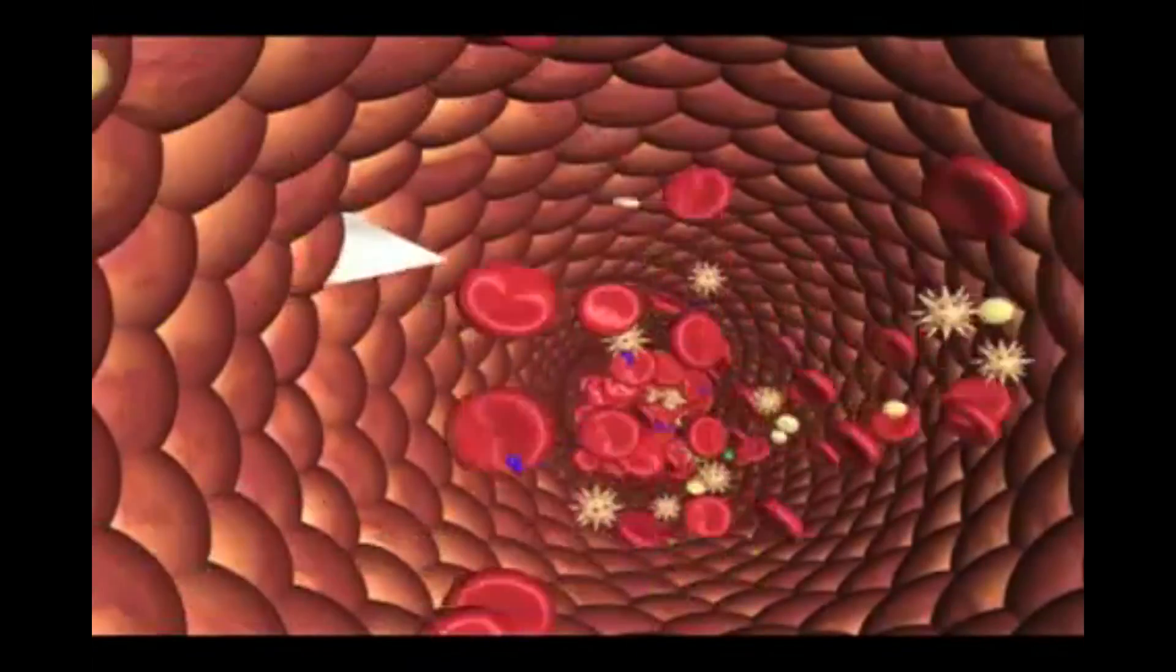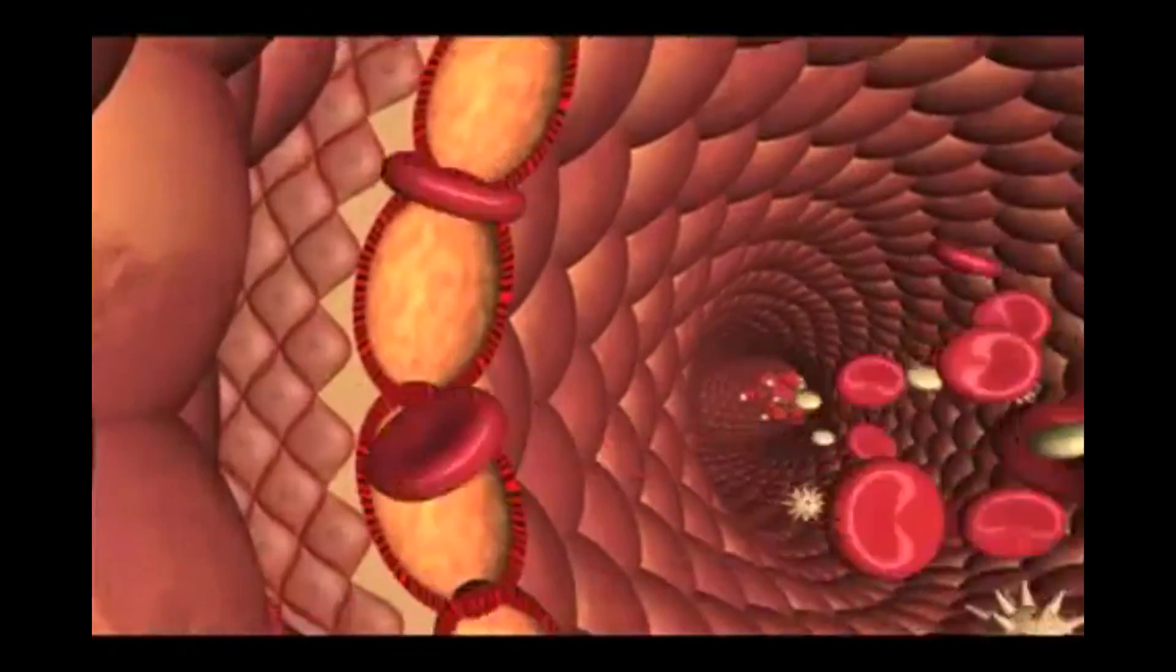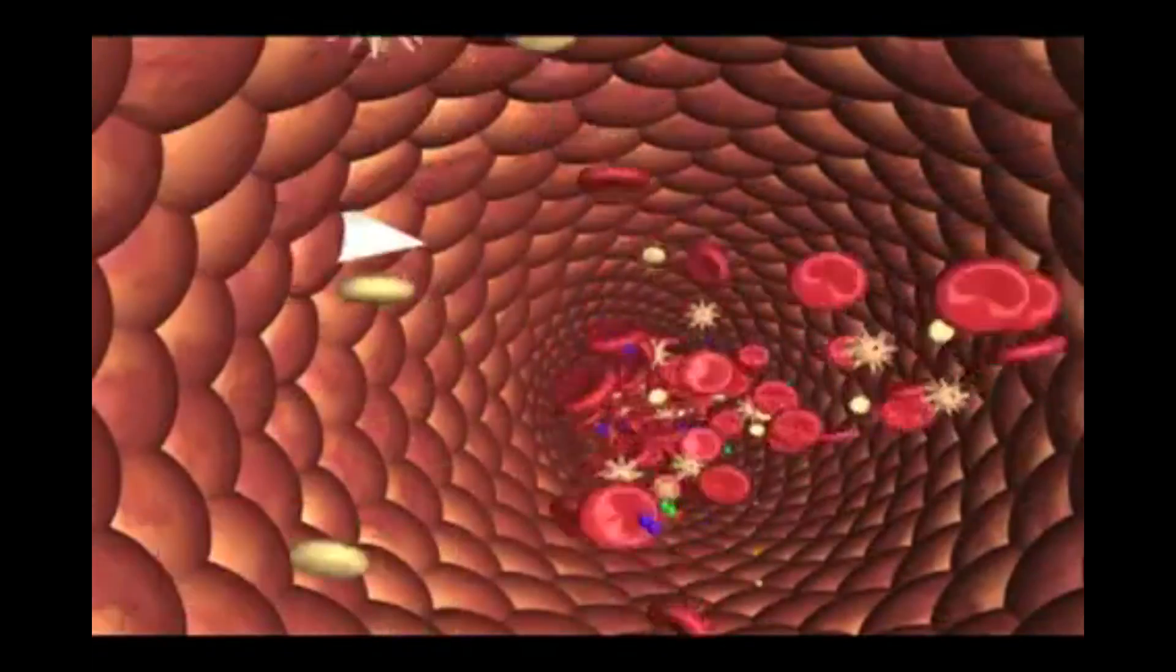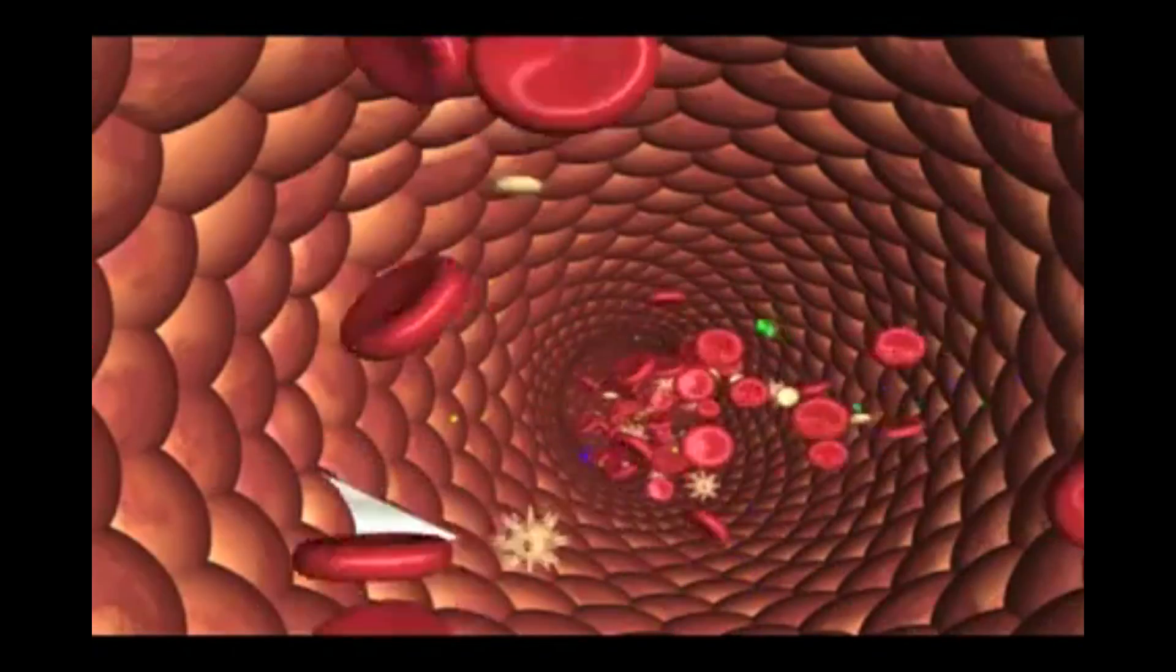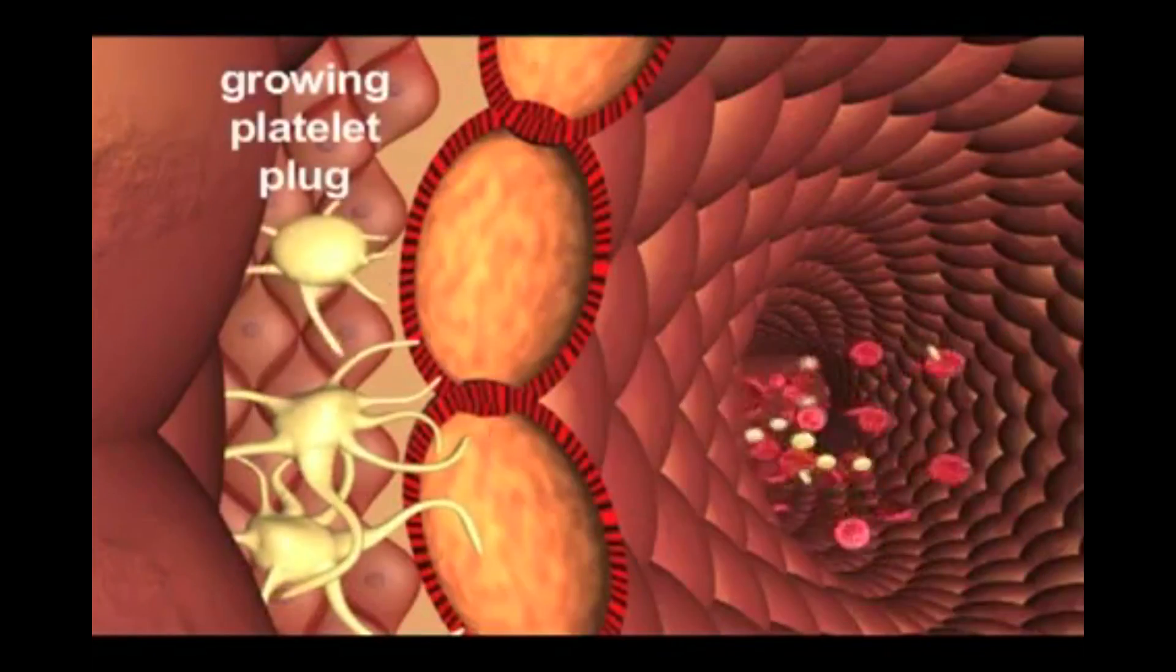When the endothelial lining is disrupted, in this case by a perforating injury, the extravascular compartment and blood interact to rapidly produce a vigorous local coagulation response which attenuates blood loss and initiates the vascular repair process.